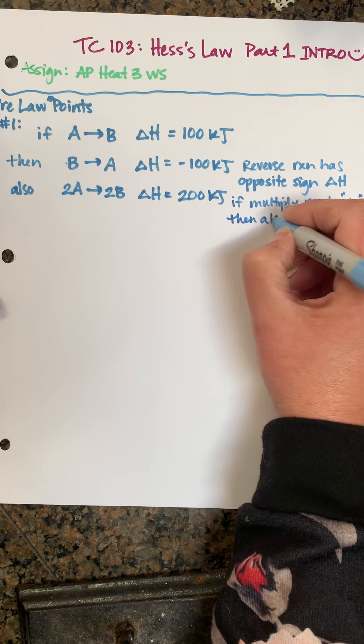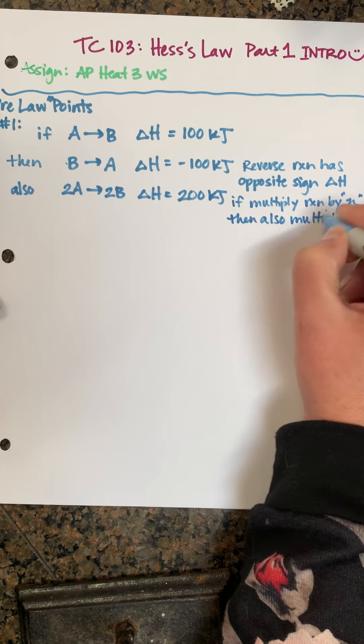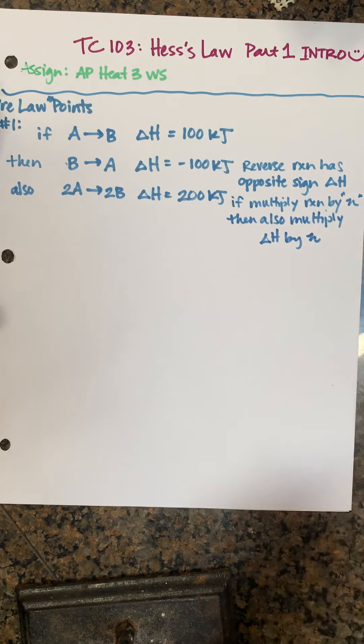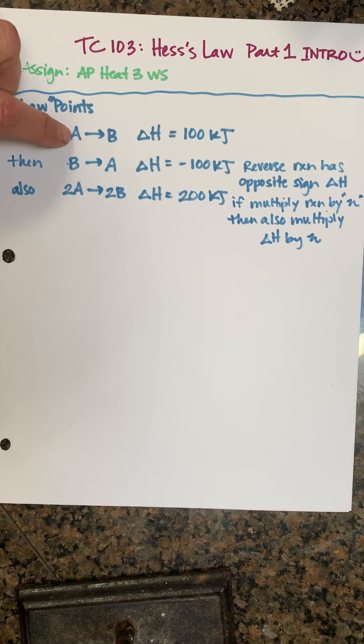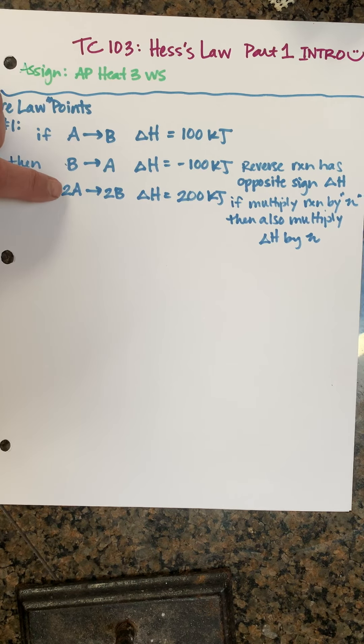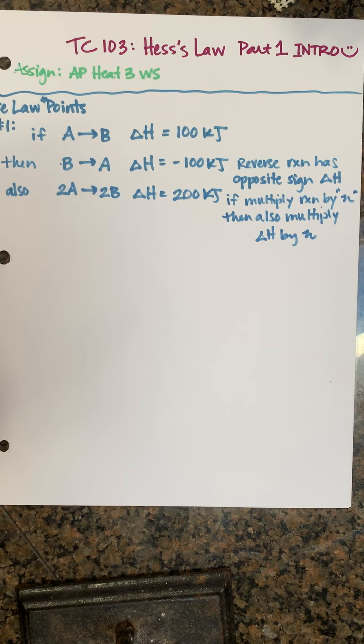So you can see here this reaction is related to this reaction, and this is twice this one, so the ΔH is two times that one. Pretty simple, pretty straightforward.